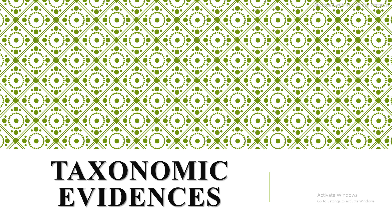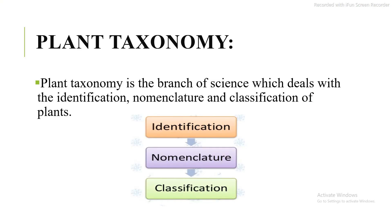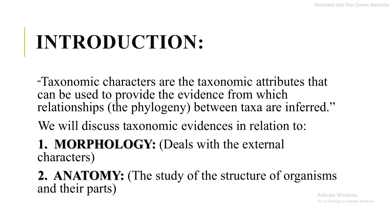The topic of my today's video is about taxonomic evidences. First of all, I will define plant taxonomy. Plant taxonomy is the branch of science which deals with identification, nomenclature, and classification of plants. It means plant taxonomy has three different functions which includes identification, nomenclature, and classification, as shown in the figure.